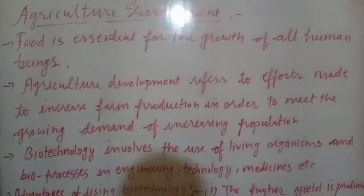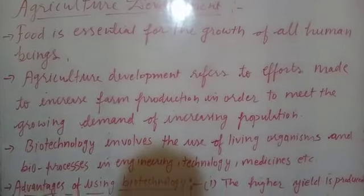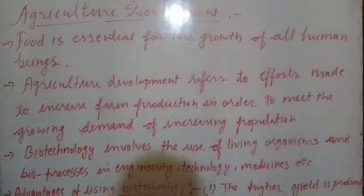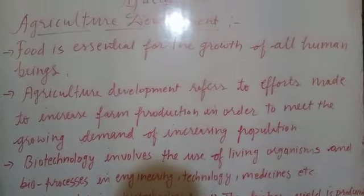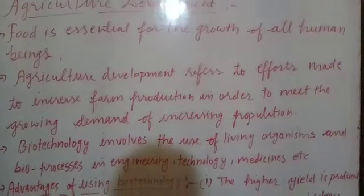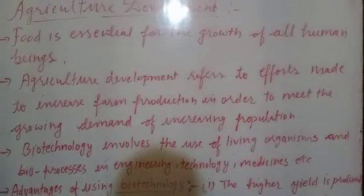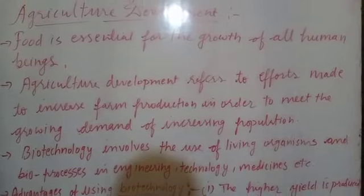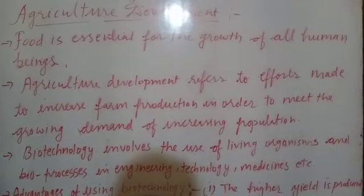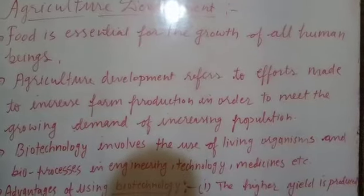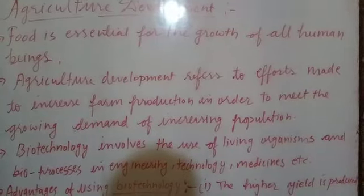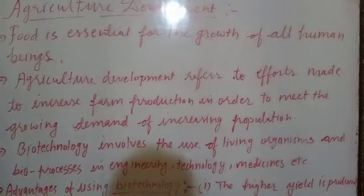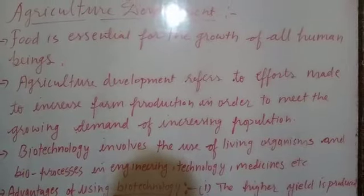cropped area, the number of crops grown, improving irrigation facilities, or use of fertilizers and high yield variety of seeds. The ultimate aim of agriculture development is to increase food security.